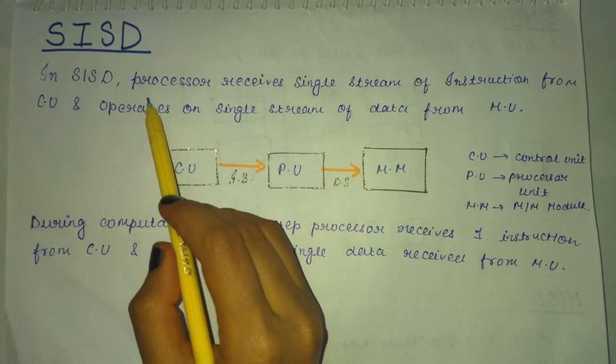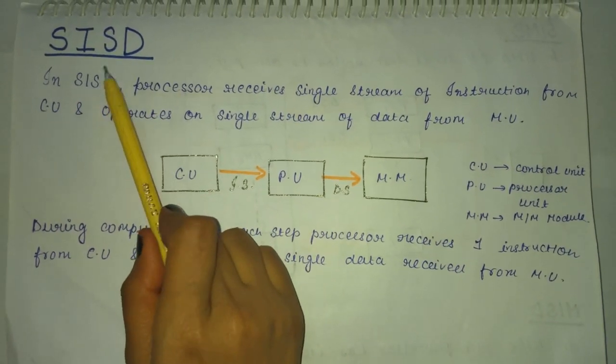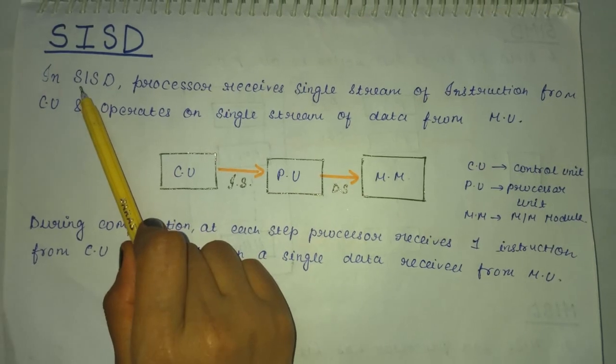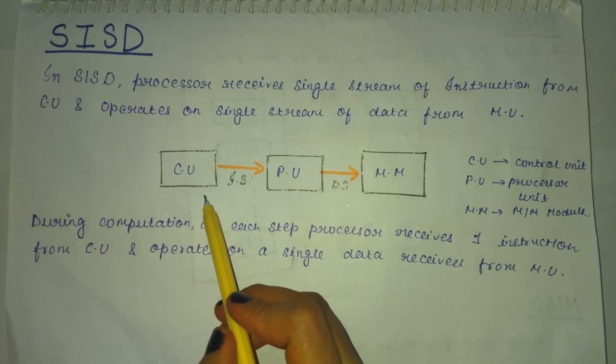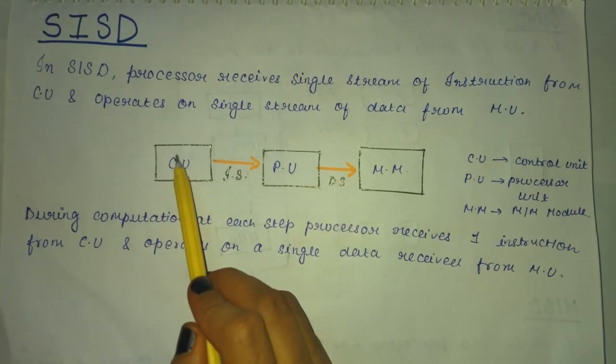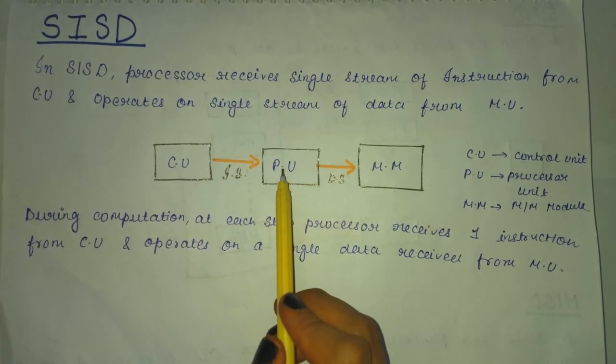First one is SISD, which is single instruction stream and single data stream. In SISD, processor receives only one stream of instruction from CU and operates on single data stream from MU.